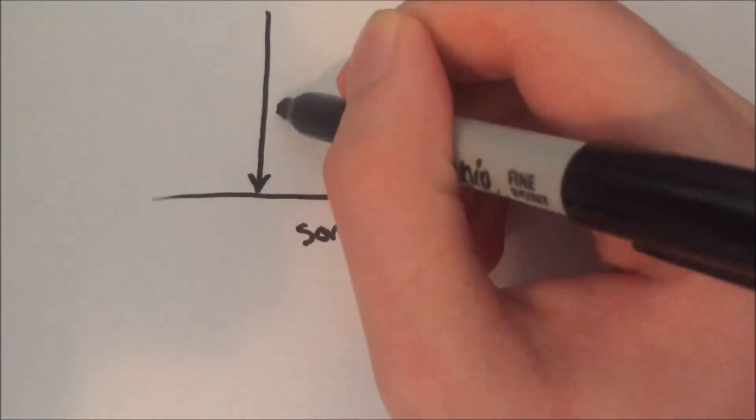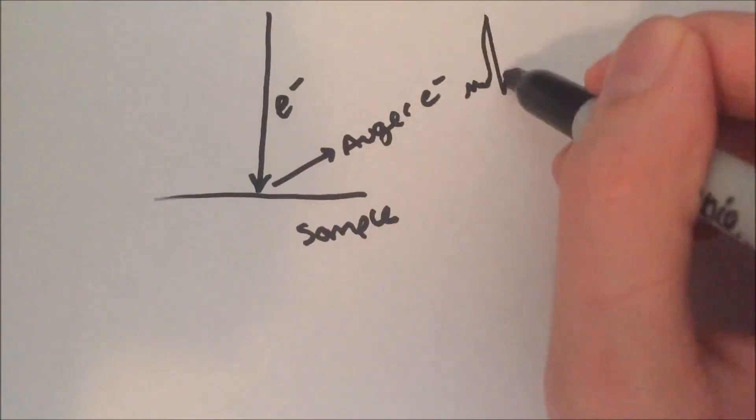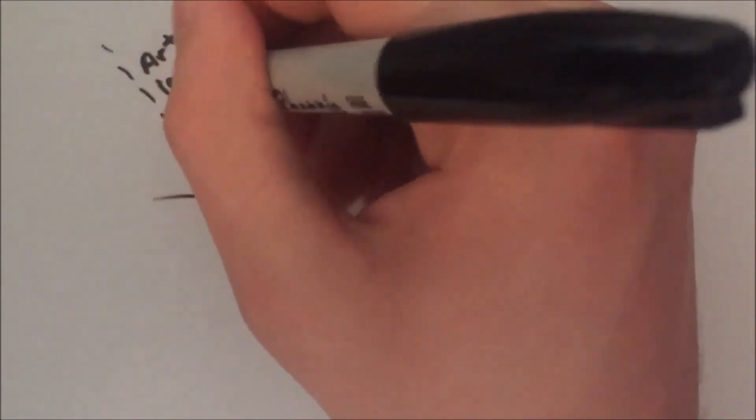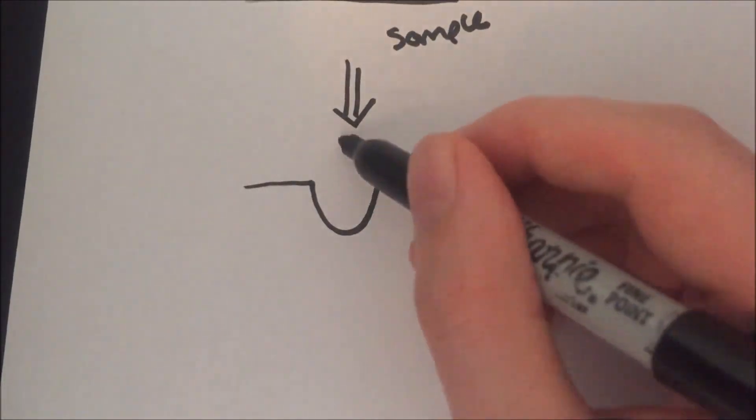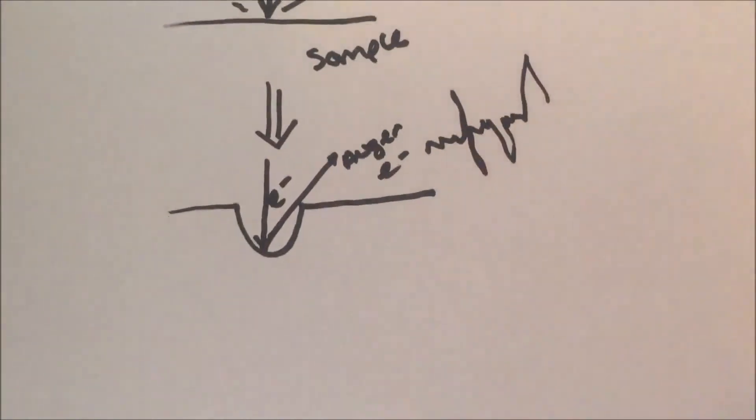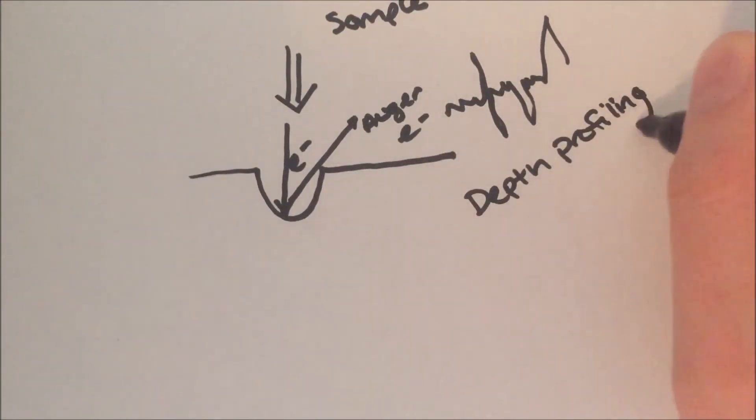Additional elemental information can be obtained through Auger spectroscopy by pairing it with a high-energy ion gun. This ion gun can be used to etch the surface of the sample, allowing for Auger electron analysis at a deeper region. This type of analysis can give very precise elemental information, but is destructive to the sample surface.